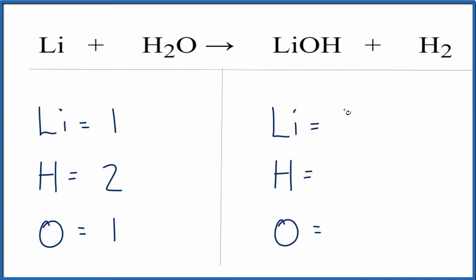On the product side, we have the one lithium. We have one hydrogen here plus these two right here. So we need to add that plus two. That gives us three hydrogen atoms. And then oxygens, we have the one.